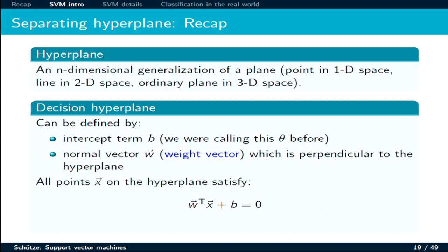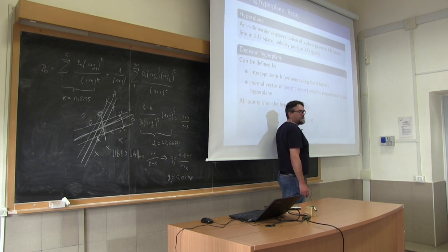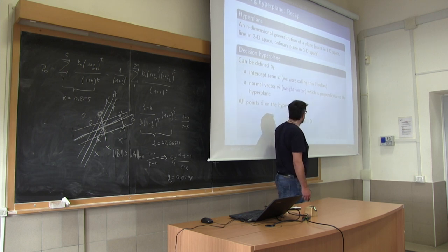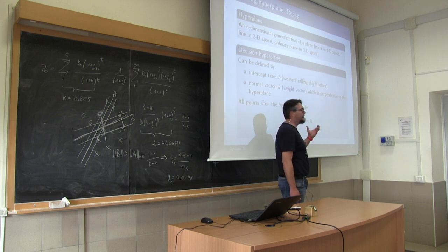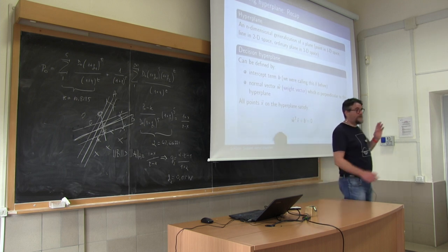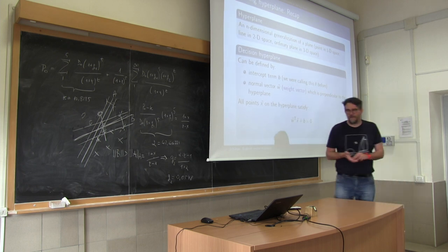In general, our hyperplane would have this form — it's a plane. All the documents x solving this equation will basically define the hyperplane. What are we missing? We are missing W and B. So we have to find out W and B in order to define a hyperplane that will make the separation between the two classes as big as possible. This is the main purpose of SVM.